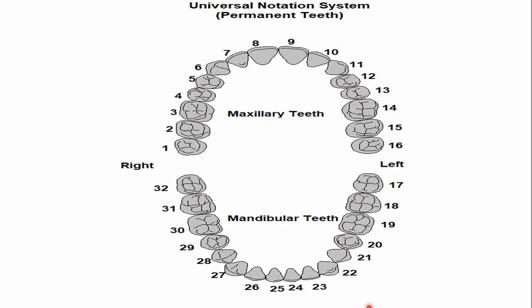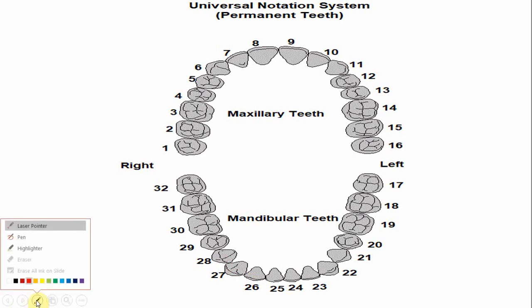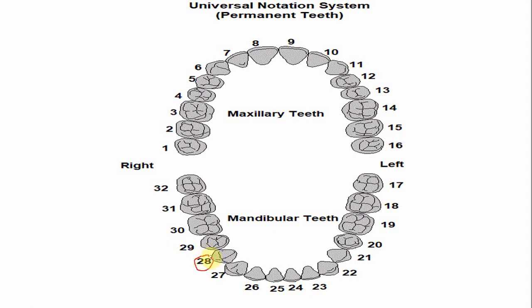What is the number of this tooth in various tooth numbering systems? Counting from central incisor, lateral, canine, and first premolar — in the universal numbering system, the mandibular right first premolar is number 28, and the mandibular left first premolar is number 21.